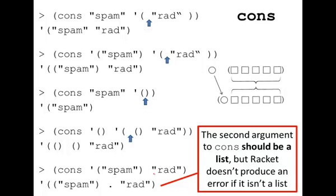Here are a few more examples of cons, and these blue arrows show where it squeezes in, essentially, that first element.